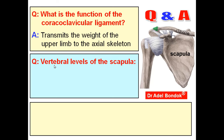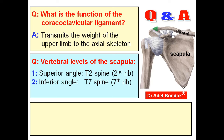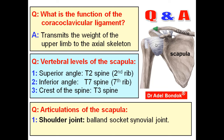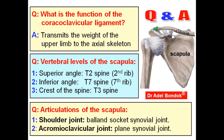What are the vertebral levels of the scapula? The superior angle lies opposite the second rib (T2 spine), the inferior angle lies opposite the seventh rib (T7 spine), and the crest of the spine lies opposite the third thoracic spine (T3). The scapula forms two joints: the shoulder joint between the glenoid cavity and the head of the humerus (ball and socket synovial joint), and the acromioclavicular joint between the acromion and the lateral end of the clavicle (plane synovial joint). Thank you very much, best wishes and good luck.